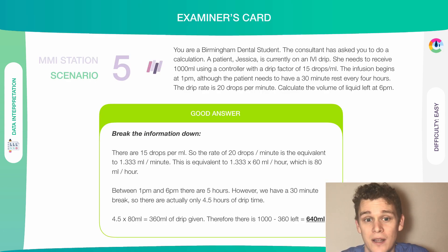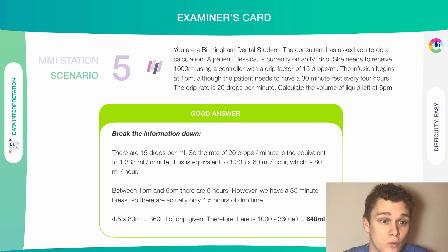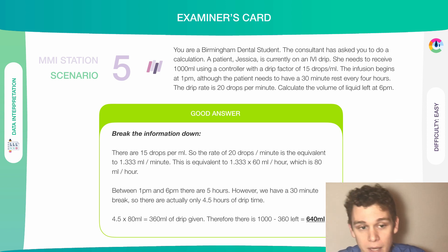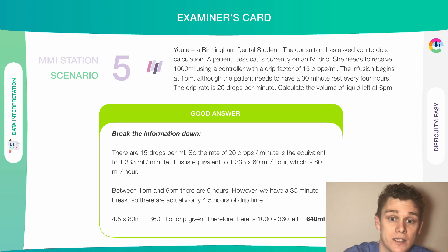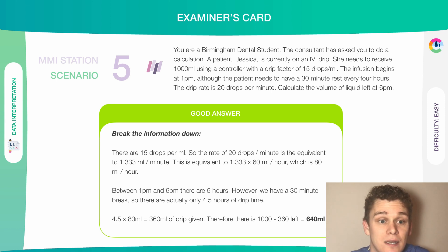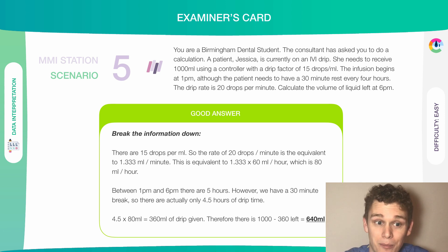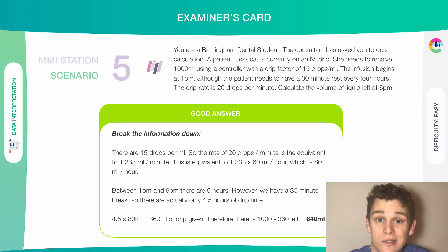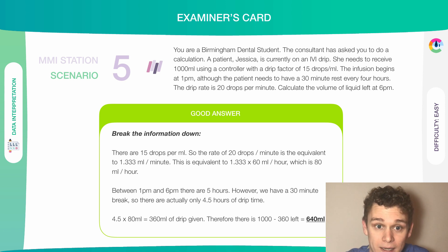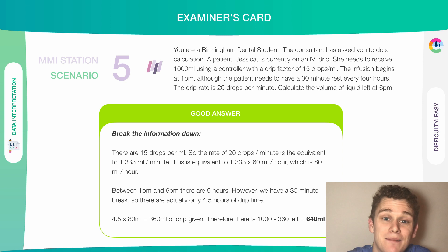Break down the information. There are 15 drops per ml, so a rate of 20 drops per minute is equivalent to 1.333 ml per minute. This is equivalent to 1.333 times 60 ml per hour, which is 80 ml an hour. Between 1pm and 6pm there are 5 hours, but remember every 4 hours we have to take a 30-minute break, so we lose 30 minutes. The total drip time is actually 4.5 hours. So 4.5 times the hourly drip rate of 80 ml gives 360 ml of drip administered.